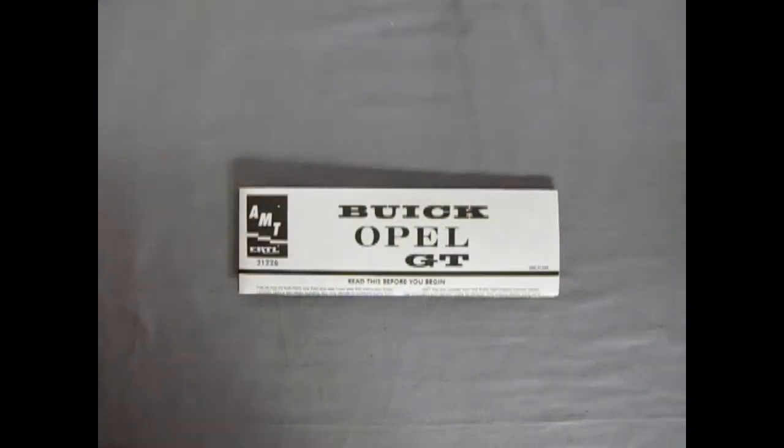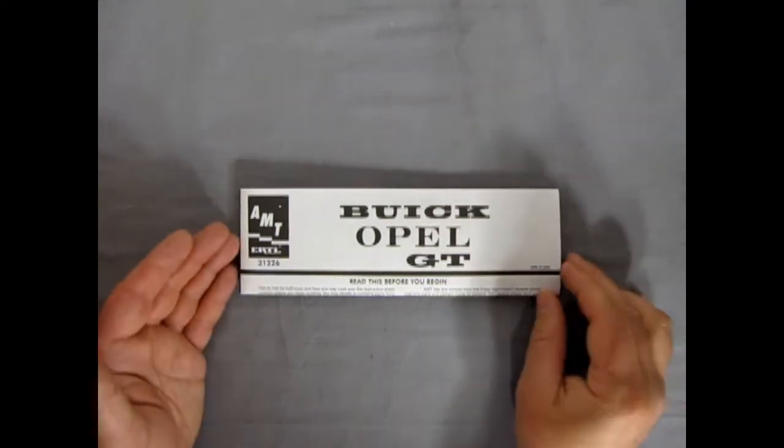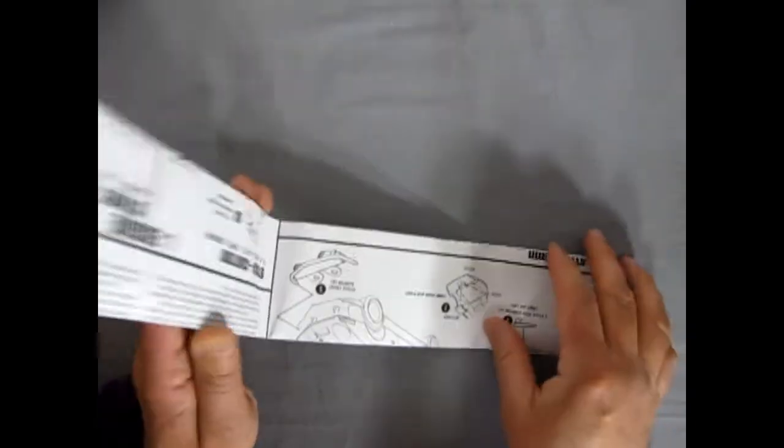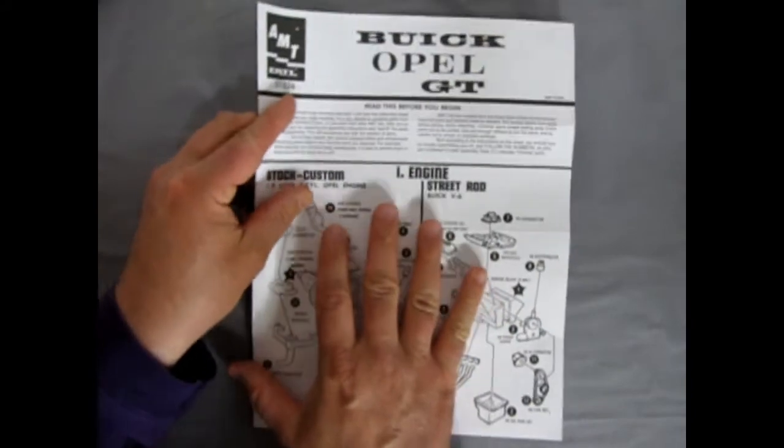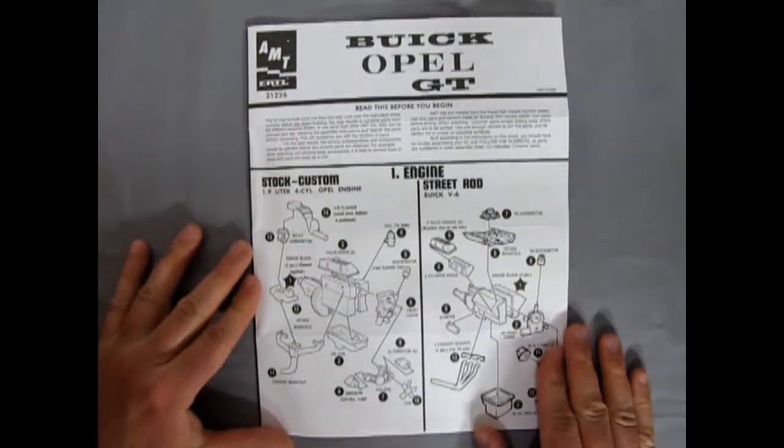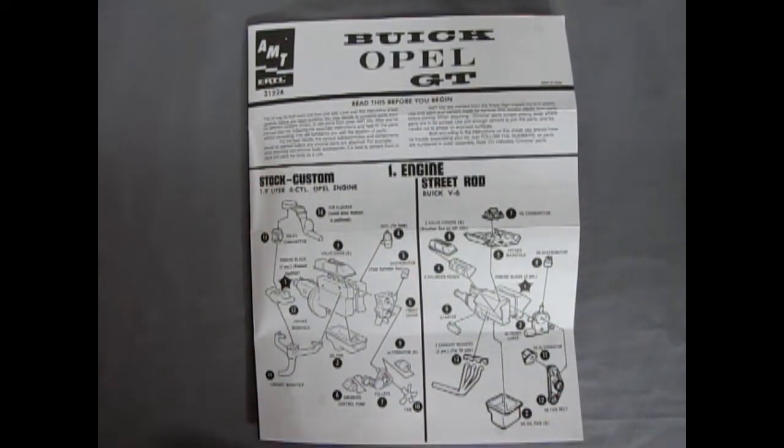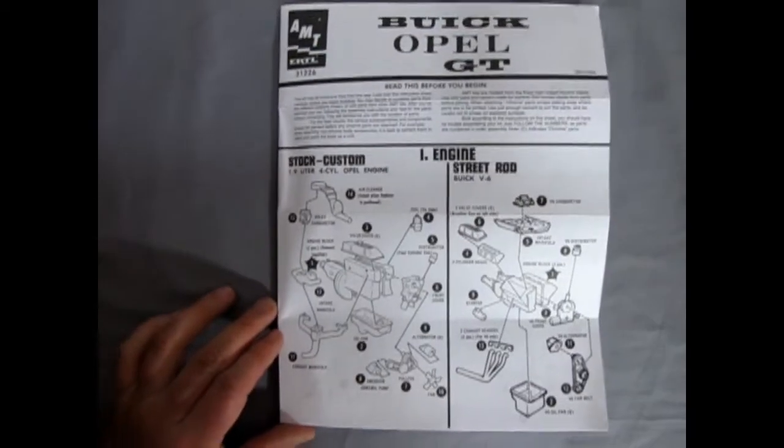Next up we have our instruction sheet. And let's just open this up. Looks very tiny. But it's actually been folded a lot of times. As you can see here. So here we go with the opal instructions. Which is really cool. So let's just zoom on down.